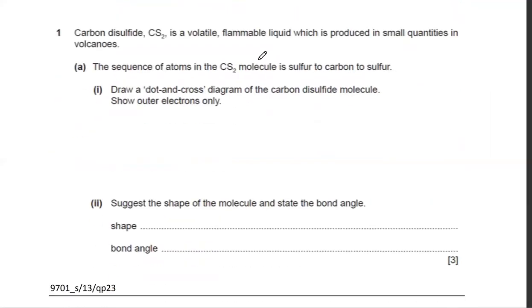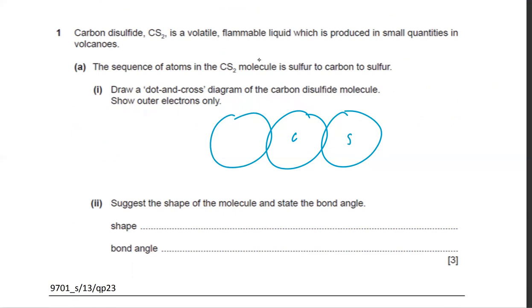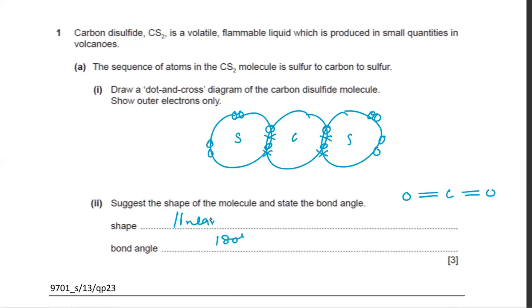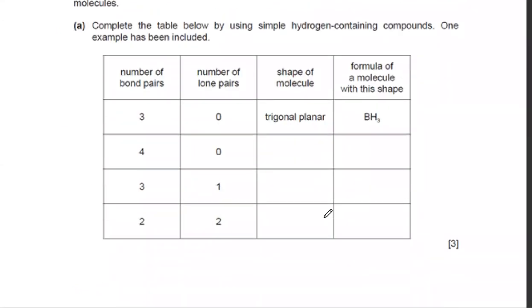For CS2, carbon makes a double bond with each sulfur. Sulfur is in group six, leaving four electrons as lone pairs. The shape is linear because the central carbon has no lone pairs — the bonds are as far apart as possible — giving a bond angle of 180 degrees.